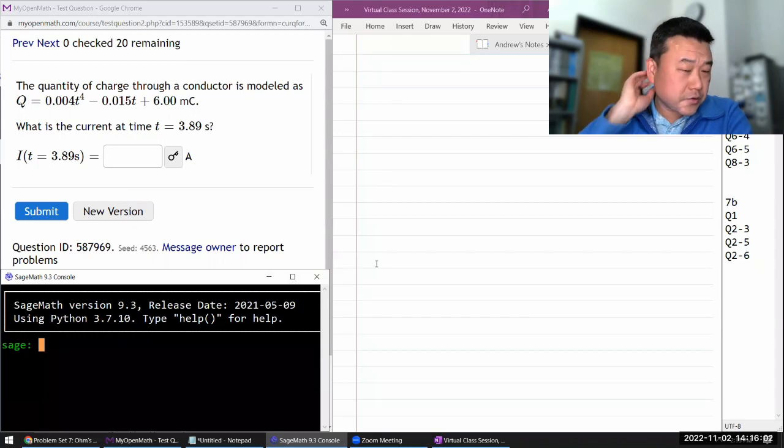So yeah, so this is the question. It says the quantity of charge through a conductor is modeled as Q, this quantity. And as you are reading it, if all of it didn't fully make sense, I agree with you. This is a terribly worded text of a question.